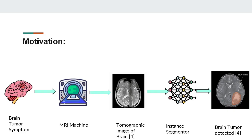Generally, when a patient has a headache or any problem with his head, he goes for a check-up and the doctor prescribes an MRI or CT scan. From the scan, a tomographic image is generated. If we feed this image into a deep neural network-based instance segmentation model, it will detect whether any tumor is present, and if so, where its location is.